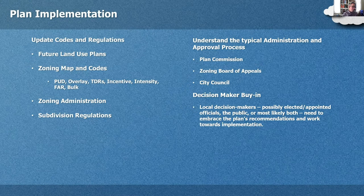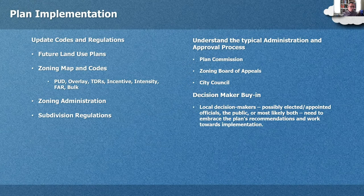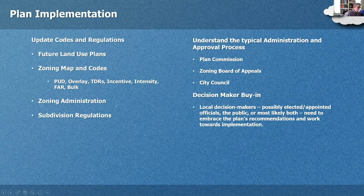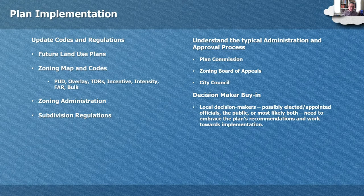Zoning is not planning — zoning is how we implement a plan. We create a future land use plan, and part of implementation is the zoning map, codes, PUDs, overlays, transfer of development rights, incentives, intensity, and floor area ratios. Know how a zoning ordinance is administered and the difference between a zoning ordinance and a subdivision regulation. In any town USA there is a zoning ordinance and subdivision regulations. The typical administration and approval process involves a plan commission, a zoning board of appeals, and a city council.